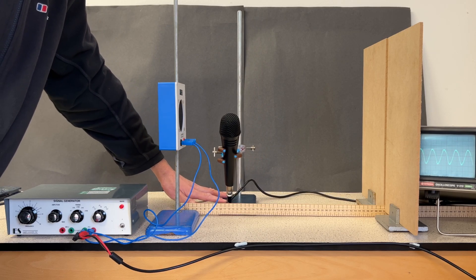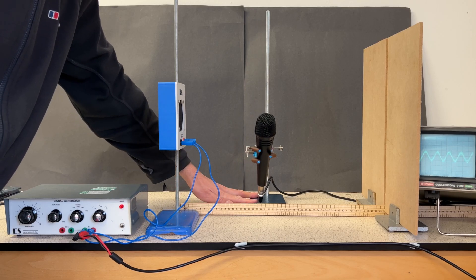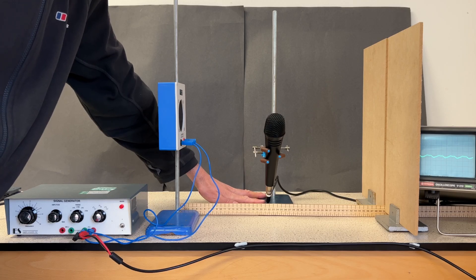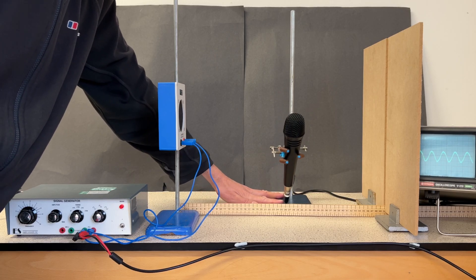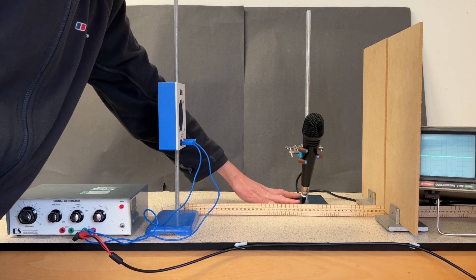The microphone connected to the oscilloscope easily allows us to pick out the nodes where the waves destructively interfere all the time and we get almost no signal, and the antinodes where we get the largest amplitude signal. Here we've arrived at another node.